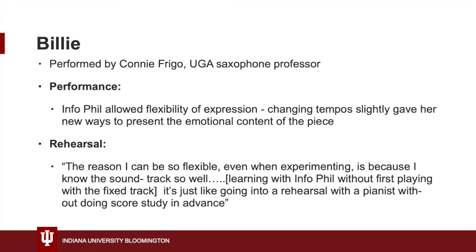Moving on to Billie — Billie is very different from Garden of Love. It's jazz-based and has a more free and laid-back feel. When working with this type of music, Connie Frigo found that small tempo adjustments could translate into very interesting changes in the piece's mood. The fixed track plays at a steady tempo, while in the flexible version Connie first speeds up then slows down — the first version sounds very calm and deliberate, while the second gives the impression of anxiety and then release.